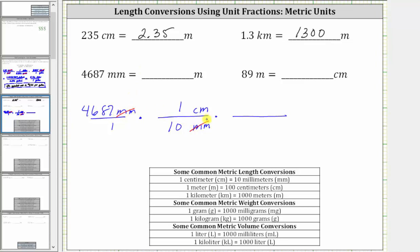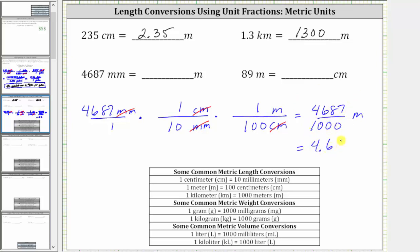The units of millimeters simplify out, and now we have centimeters, but we want meters. So we'll use the conversion that one meter is equal to 100 centimeters. Because we want centimeters to simplify out, we need centimeters in the denominator and meters in the numerator. The units of centimeters simplify out, leaving us with the units of meters. In the numerator we have 4,687 times one times one, which is 4,687. In the denominator we have 10 times 100, which is 1,000. So 4,687 divided by 1,000 equals 4.687 meters.